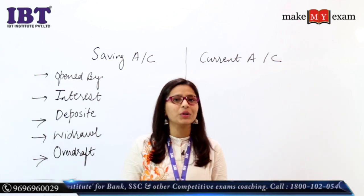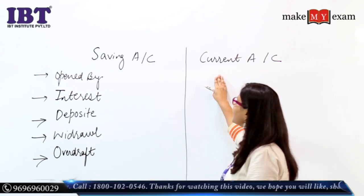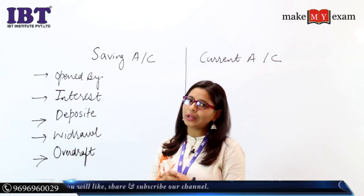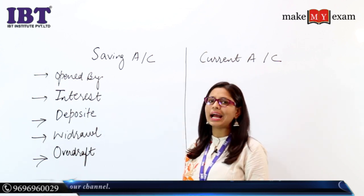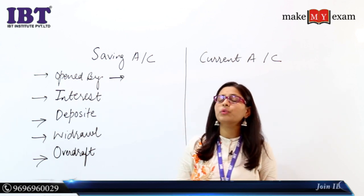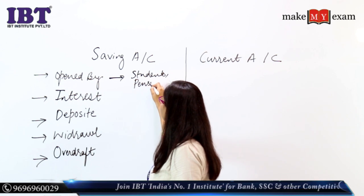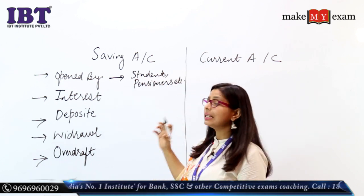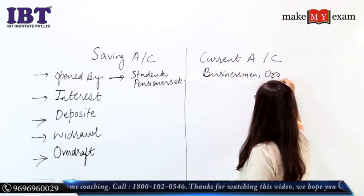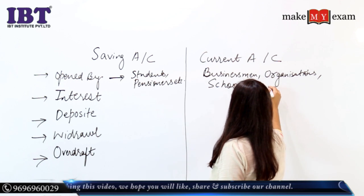Today we are going to compare which people open a saving account and which people basically open a current account. The second point we will discuss is interest in saving account versus current account, then deposit facility, withdrawal facility, and the last feature is overdraft. So first, saving account is mainly opened by students, pensioners, etc., but current account is mainly for businessmen, organizations, schools, colleges, etc.